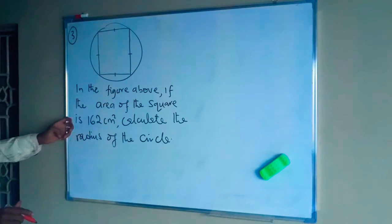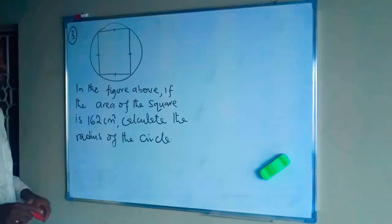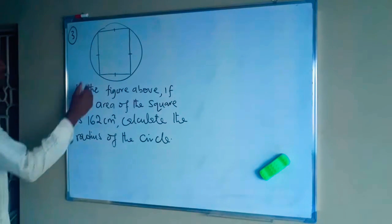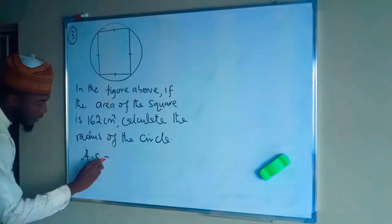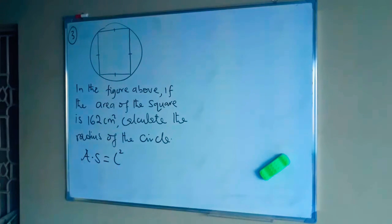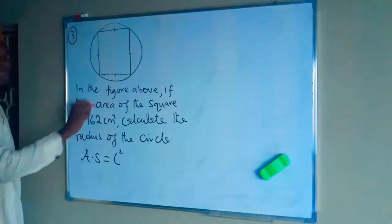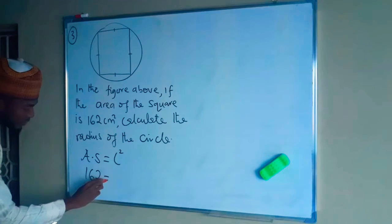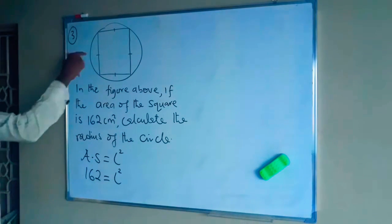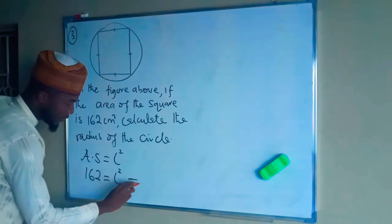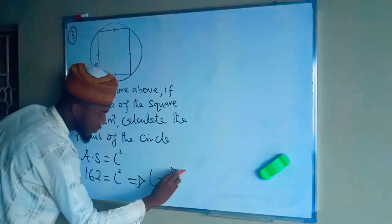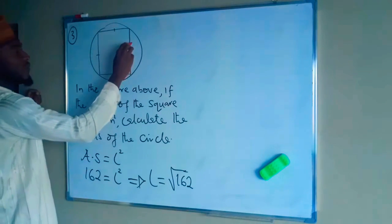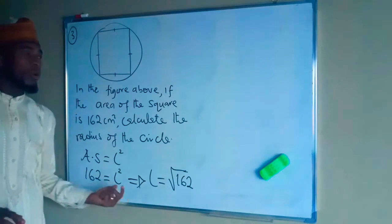Question three: in the diagram, the area of the square is 162 cm². The formula for the area of a square is L², so L² = 162, meaning each side length equals √162. We take the positive square root since length cannot be negative.